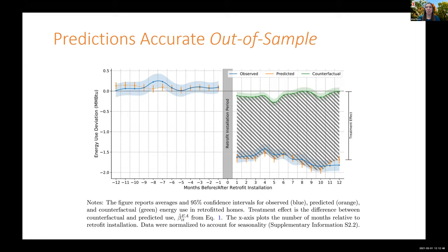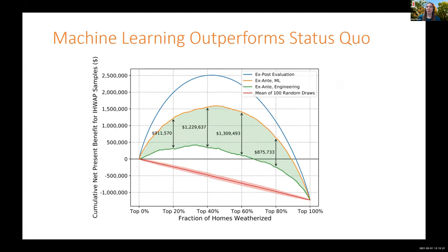What's unique about having these machine learning models is we can also predict the counterfactual — the green line shows our prediction of what energy savings would be had weatherization not occurred. It doesn't exactly overlap with the zero line because we have to use predicted weather, mimicking the exercise the policymaker would actually do. The treatment effect is the difference between predicted consumption without weatherization and predicted consumption with weatherization. The question then is: using these predicted treatment effects, can we outperform the status quo in predicting upfront which homes will have the most savings?